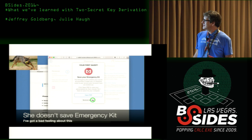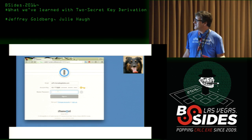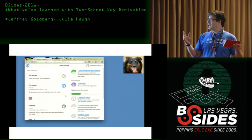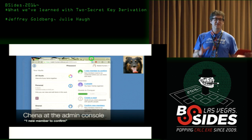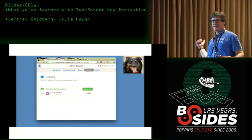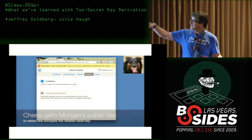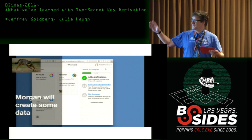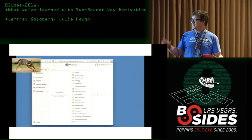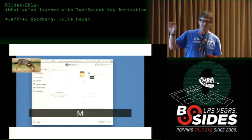Save your emergency kit — she clicks 'Remind me later.' Morgan's keys are generated by her client when she first signs up. For the public key to get to the team administrator, Chena has to go through a confirmation step — which is encrypting the vault key for the shared vault with Chena's public key.